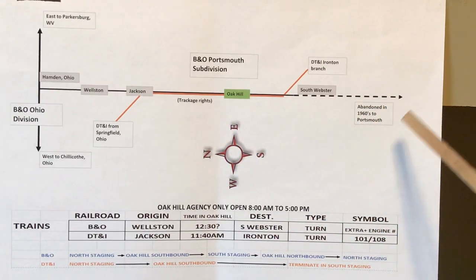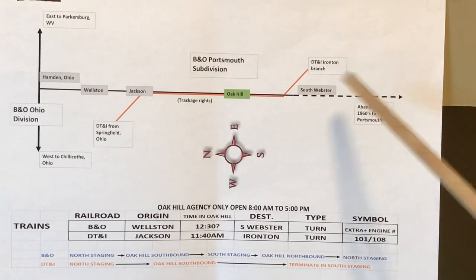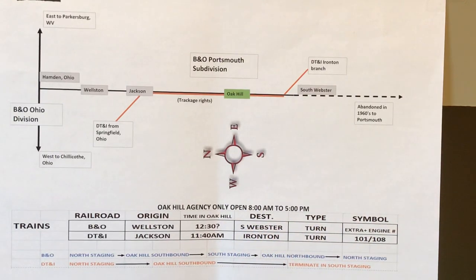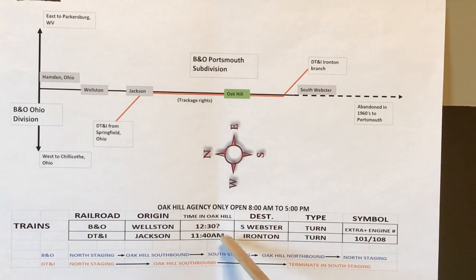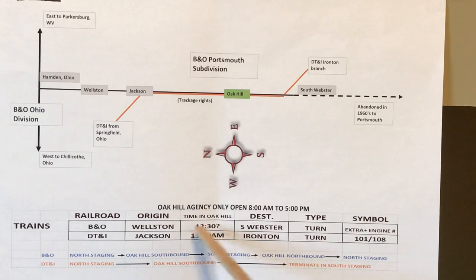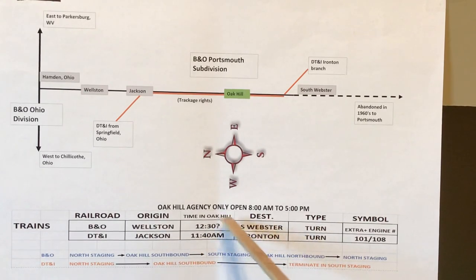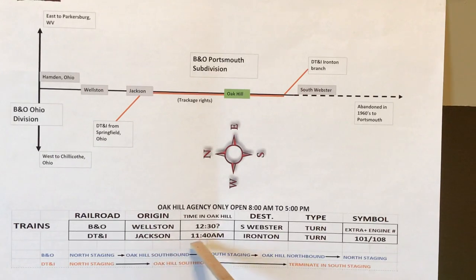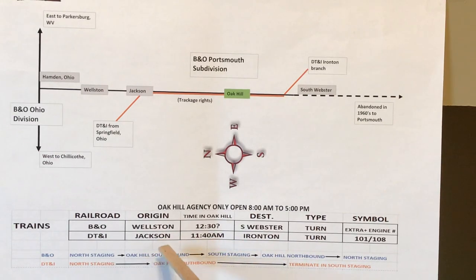The DT&I train won't run back through because in real life, by the time they ran to Ironton, did all the switching, and came back, it came back in the evening. The Oak Hill agency was only open eight to five, so the DT&I trains typically came back through Oak Hill after that time. I'm taking this from a 1984 B&O timetable. The B&O typically got to Oak Hill around 12:30. I've also got station orders from Oak Hill from the agency showing what time the train got into town and what time it left. DT&I was supposed to be in Jackson at 11:40 AM according to the timetable — usually a little before that.